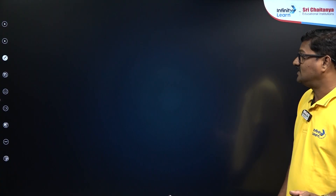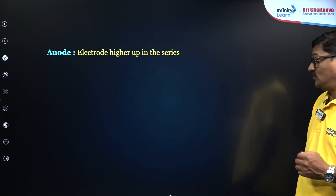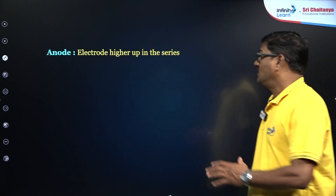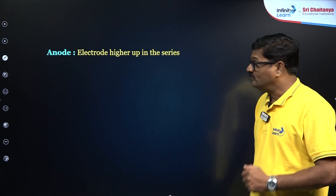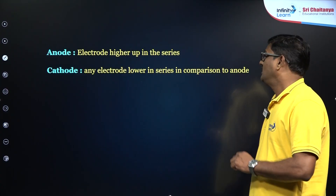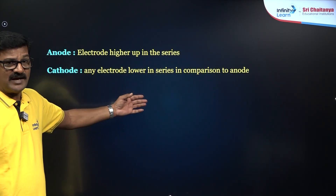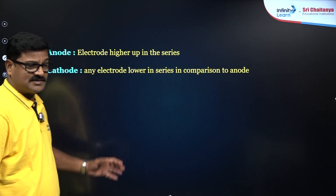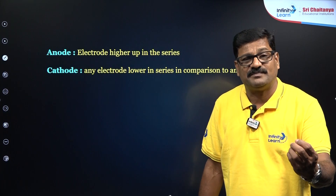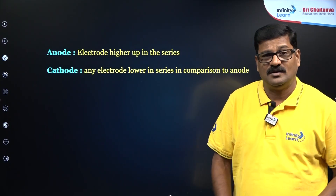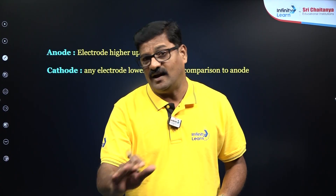Also, what is an anode and what is a cathode? The electrode higher up in the series is the anode, and any electrode lower in the series in comparison to the anode acts as a cathode. The mathematically bigger SRP value acts as a cathode, and the mathematically smaller SRP value acts as an anode.